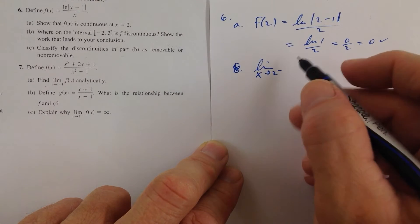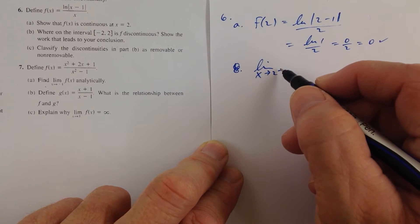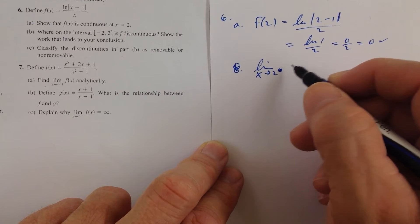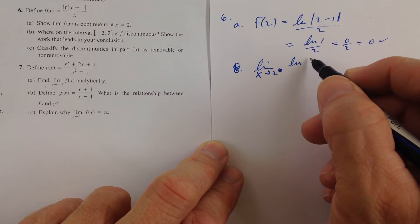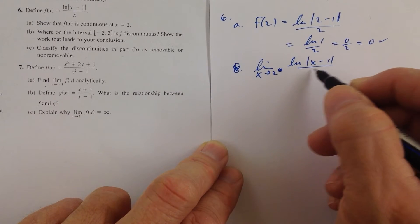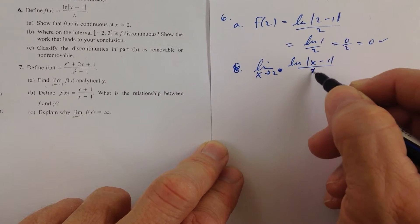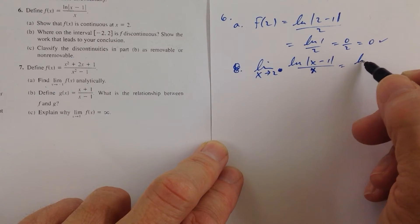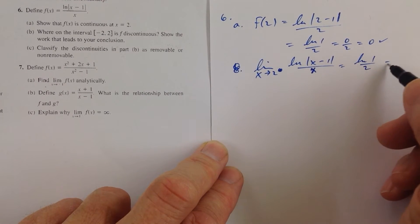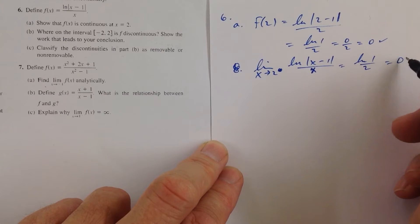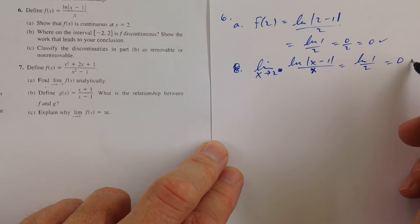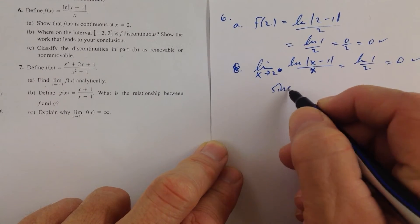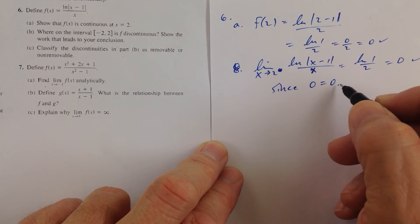The limit as x approaches 2 from either side of the ln of absolute value of x minus 1, all over x, is equal to the ln of 1 all over 2, which is equal to 0 over 2, which is equal to 0, check.